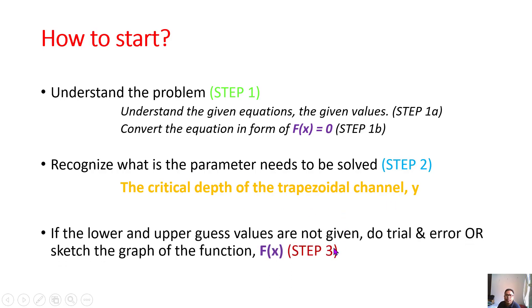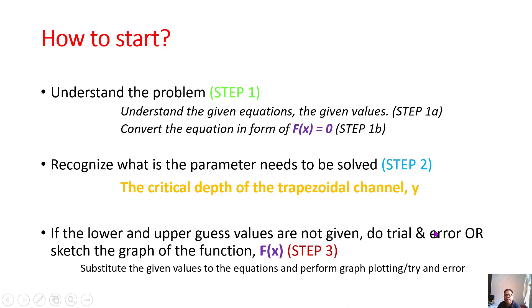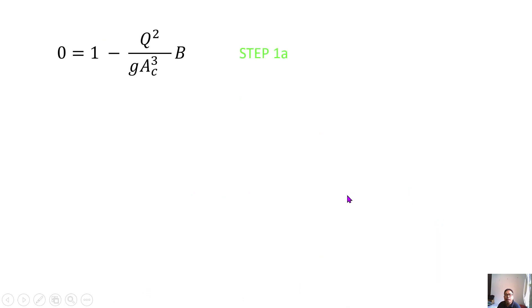The third step is to extract from the question, perform trial and error, or sketch a graph in order to determine the lower guess xl and the upper guess xu, so that you can perform bisection methods. These are the three main steps you can commonly use to solve any problems related to this topic.